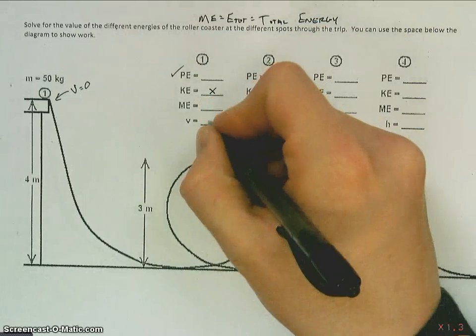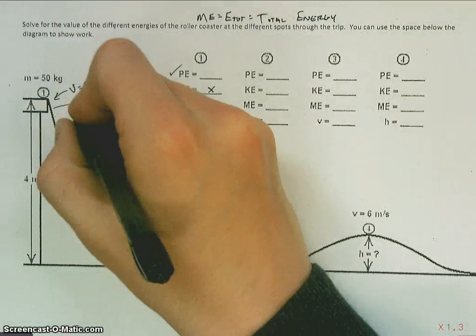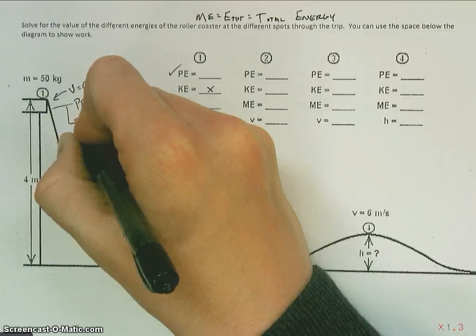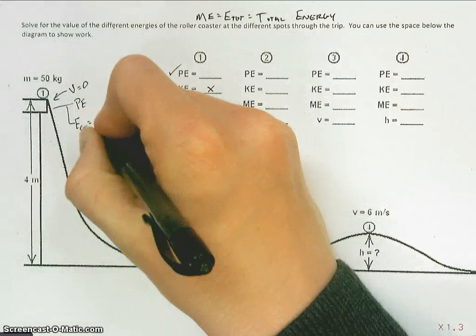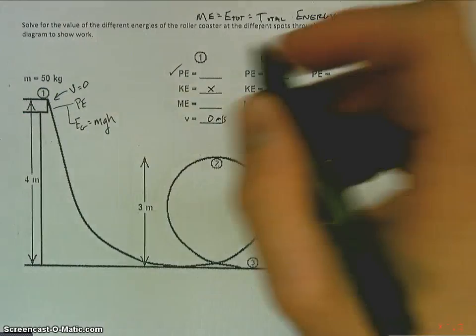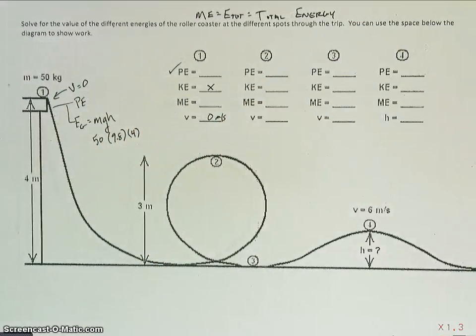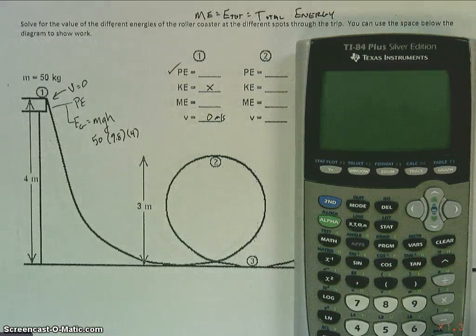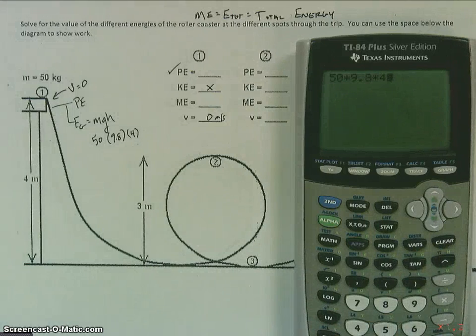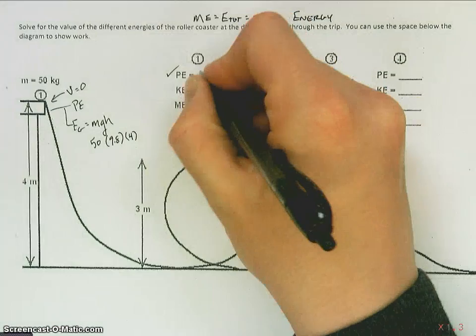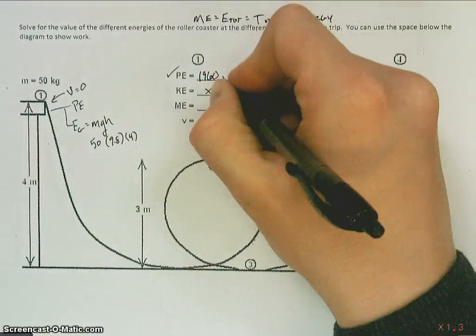And that also means then velocity is zero. So PE, we call that by the way EG, so PE is potential energy or gravitational potential. We know is mass times gravity times height. And so I'm going to take the mass 50 times gravity 9.8 times the height at that location, 4 meters. So 1960, and remember our label for work and for energy is joules.